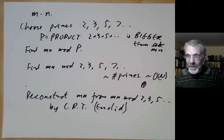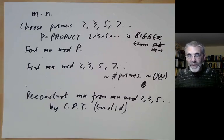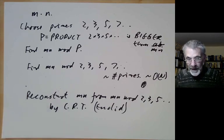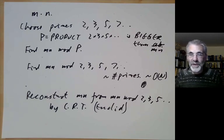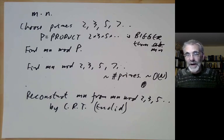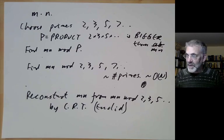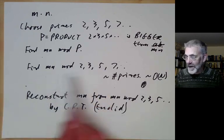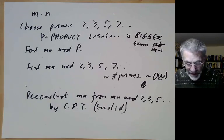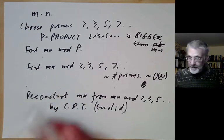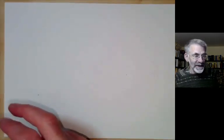In practice there are really three different cases when multiplying two numbers: first, numbers that fit into one computer word (about 64 bits today) — just use the hardware multiplication routine. Second, numbers that fit into a few computer words — use the usual high school algorithm but with base 2^64. Third, very big numbers — use some sort of Fast Fourier Transform algorithm, or this CRT method if you can't remember how the FFT works.